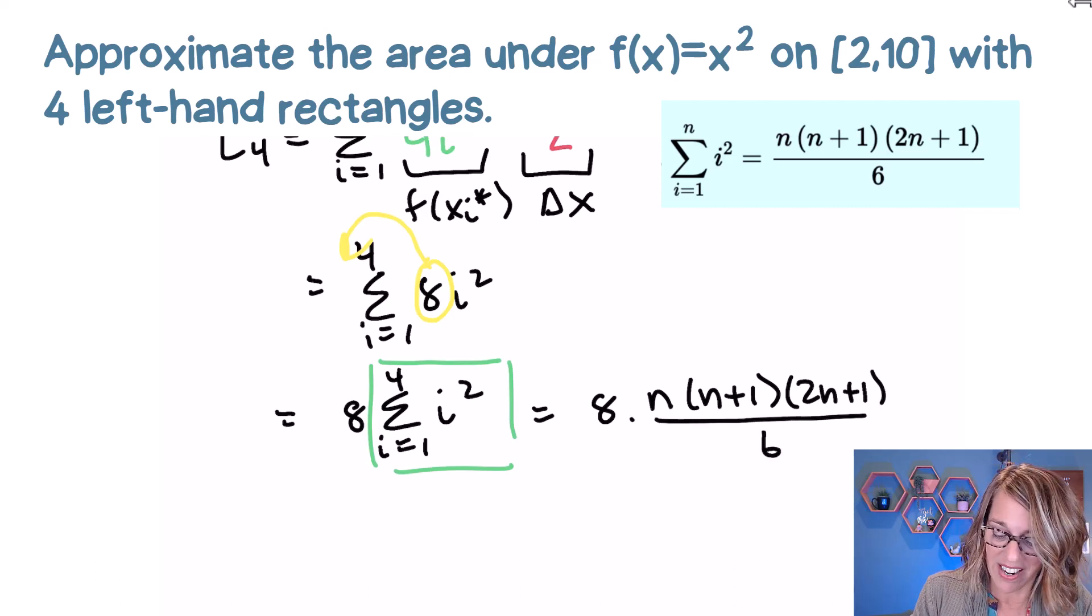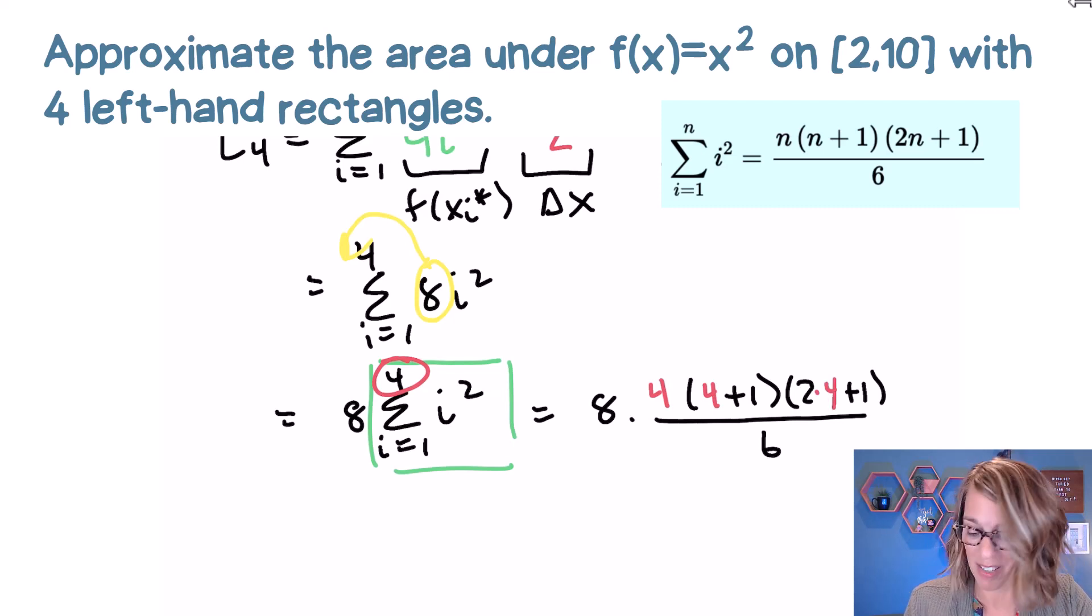But I know that n is equal to four. So I can go through and replace each of these n's with a four. So here comes that four. So I get a four here, four plus one, two times four plus one.